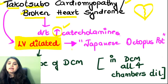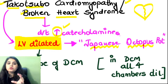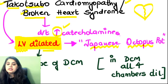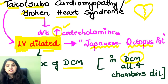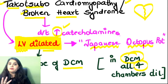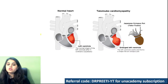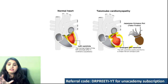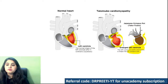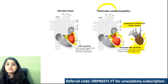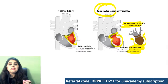Why do you call it Takotsubo? It's a Japanese pot used to catch the octopus. That is how your left ventricle of the patient starts looking. In dilated cardiomyopathy, all four chambers are dilated, whereas in broken heart syndrome only the left ventricle is dilated. The left ventricular cavity becomes globular like that octopus pot — that's why we call it Takotsubo. So, Takotsubo is a type of DCM — dilated cardiomyopathy.